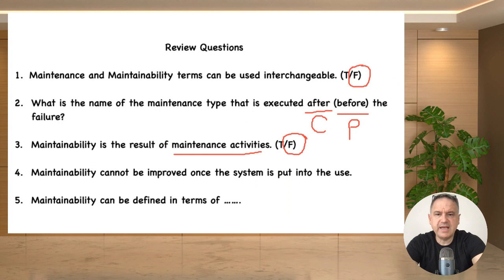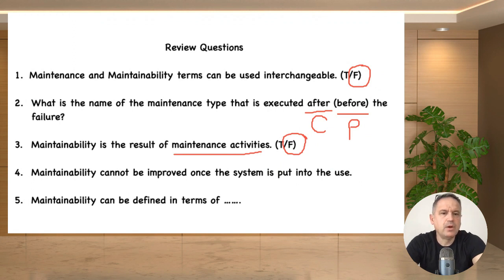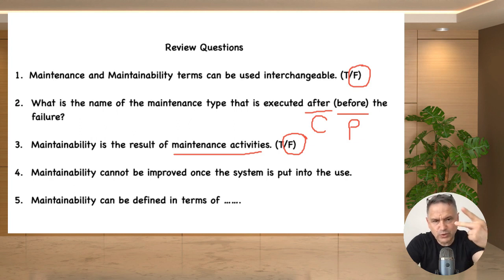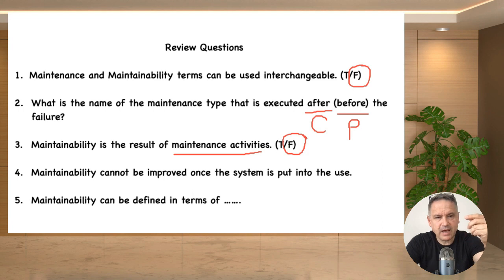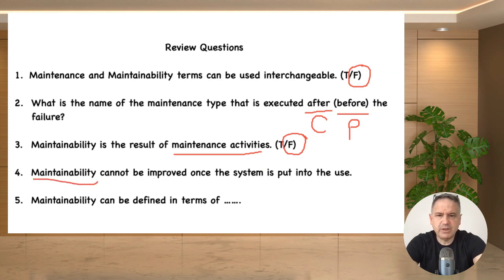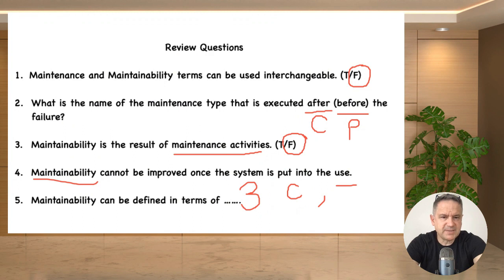Question four: maintainability cannot be improved once the system is put into use — true or false? False. Remember the diagram — we have two ways to improve maintainability: first, in the design phase, and the other through modifications. When we do modifications, we do so after using the system for a while. So we have two alternatives to improve maintainability. The last question: maintainability can be defined in terms of three elements — what are these? These are the cost perspective, times perspective, and frequency perspective.